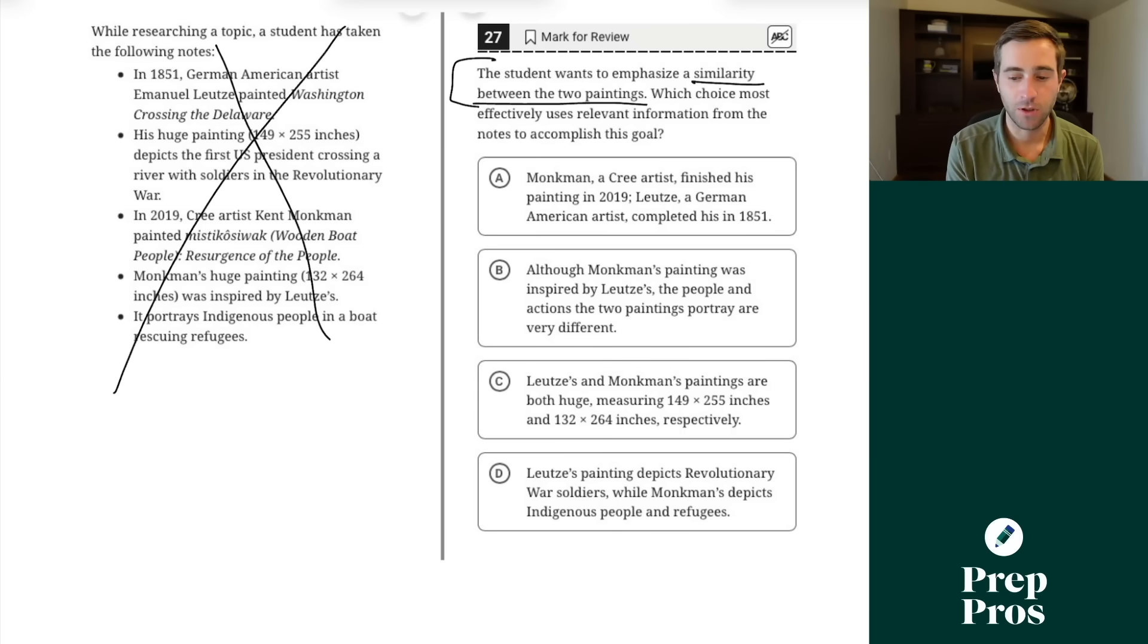Well, if we go through our answer choices and we don't see a similarity between two paintings, we can eliminate it. Monkman, a Cree artist, finished his painting in 2019. Lutze, a German-American artist, completed his in 1851. Well, this would be a difference, not a similarity. Although Monkman's painting was inspired by Lutze's, the people and actions the two paintings portray are very different. Well, this is not a similarity. Lutze and Monkman's paintings are both huge. There's a similarity.